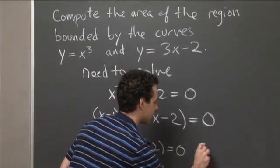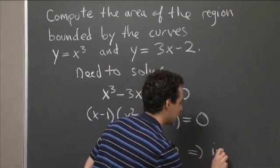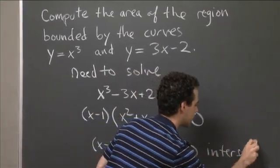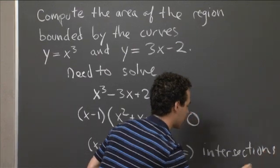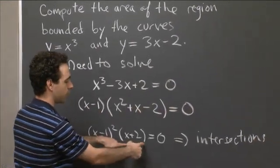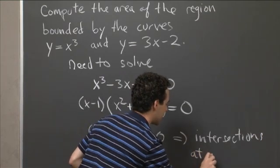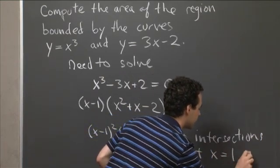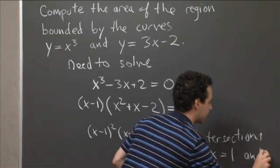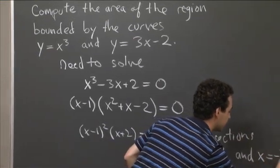which means that we have intersections when either x minus 1 is 0 or when x plus 2 is 0. So intersections at x equals 1 and x equals minus 2.